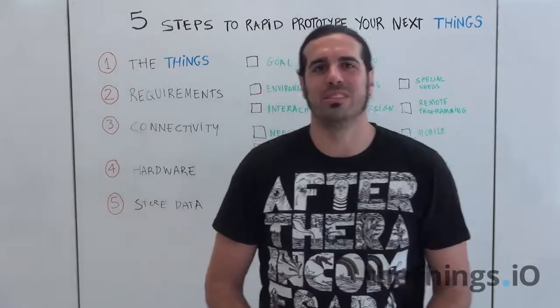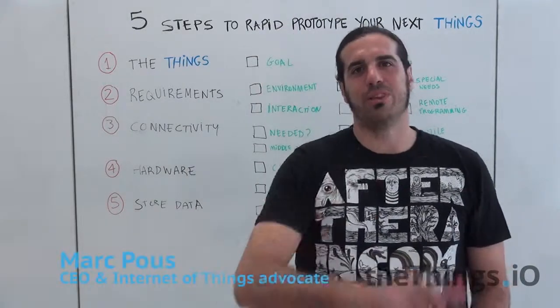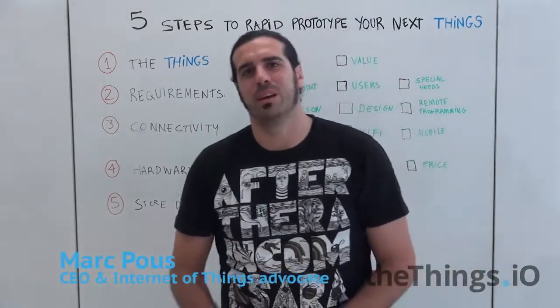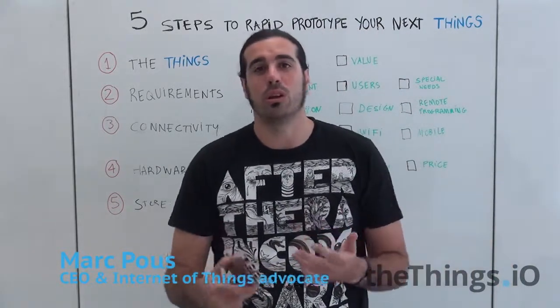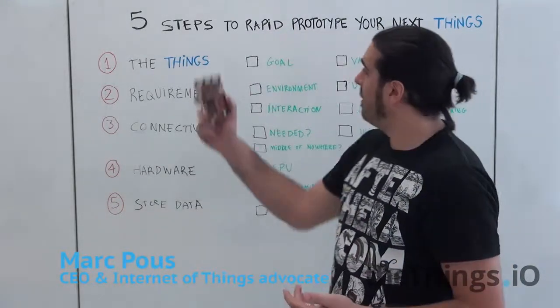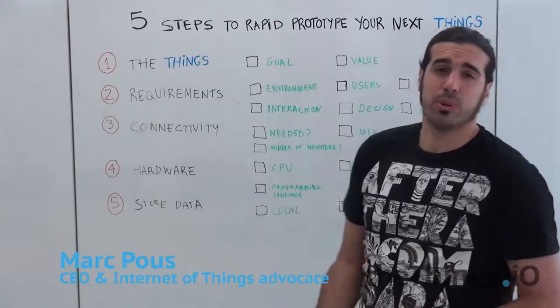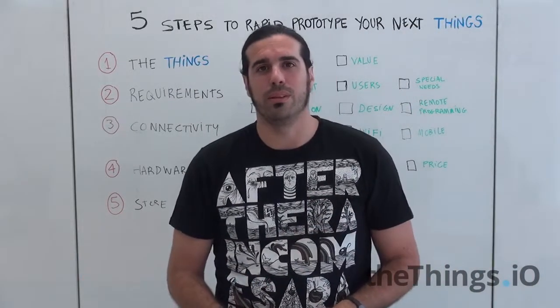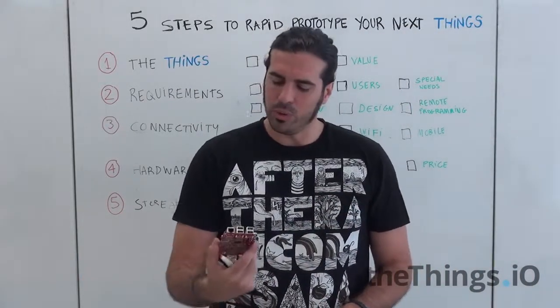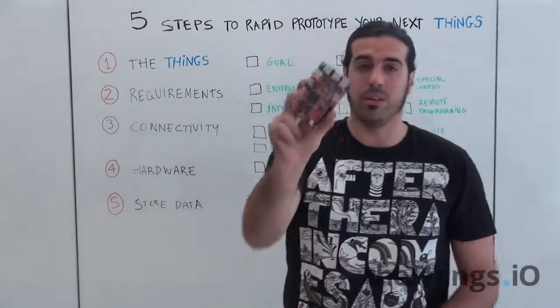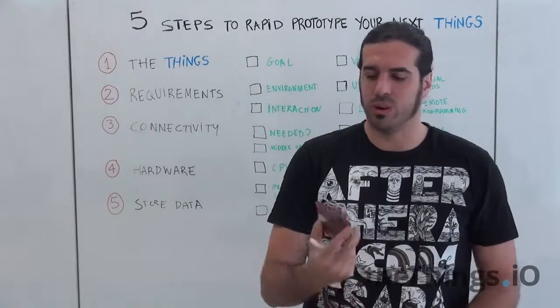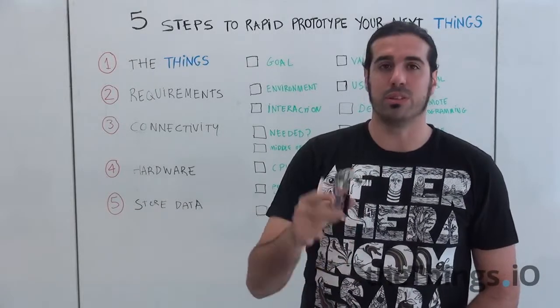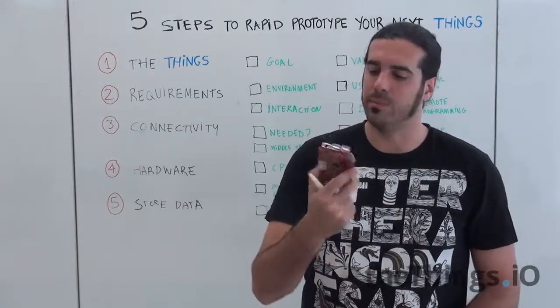Hello, Things of the IO friends! This is a new edition of IoT Friday and today I'm going to talk about five steps to rapid prototype your next thing connected to the internet — and I'm going to do it with the help of my new Riot board from Element 14 from Freescale.